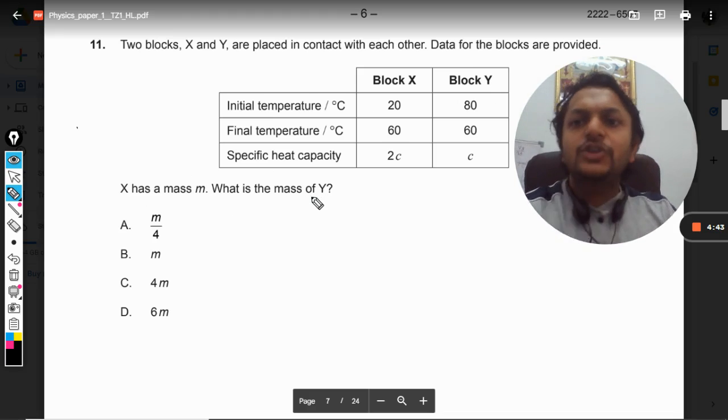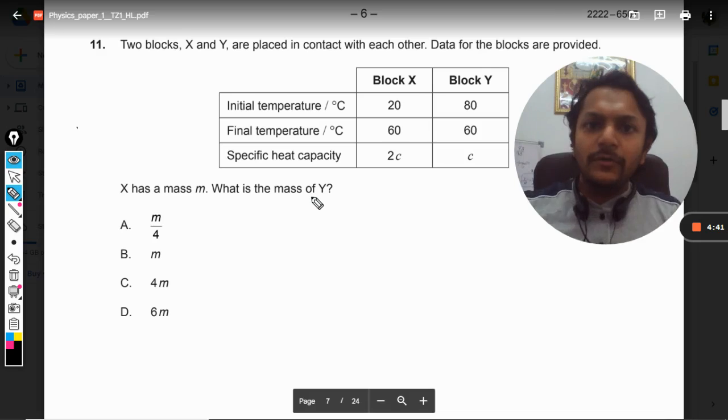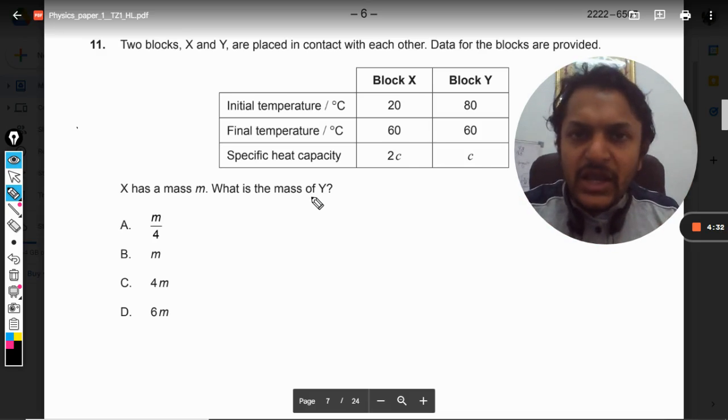Now there are two blocks. Obviously they are made up of two different materials, they have different temperatures, and now they are brought in contact with each other. So they are exchanging heats with each other. So what is the principle of this heat exchange which is known as calorimetry?